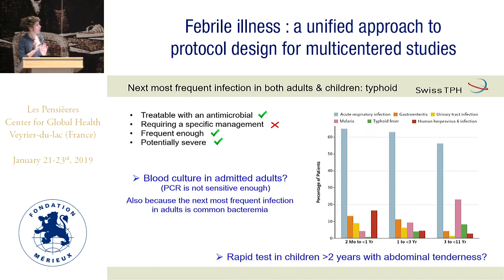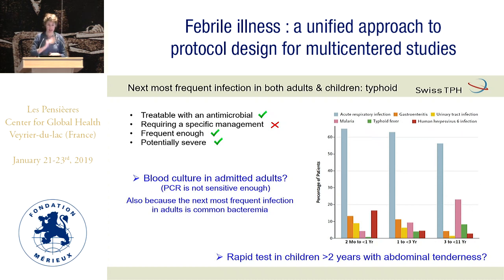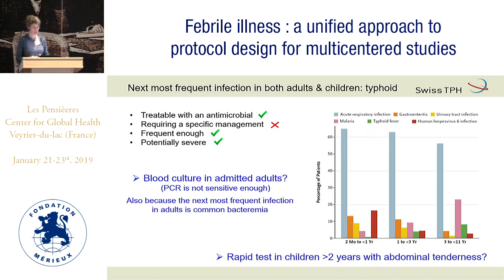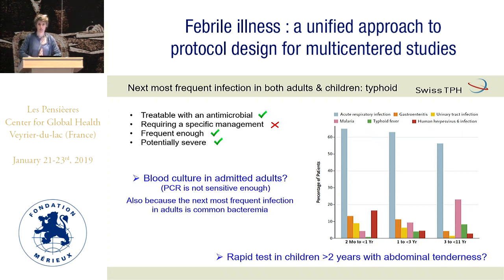For children, we would like to test for typhoid before they are admitted. Should we use the rapid test in the subgroup with abdominal tenderness? I think it's worth it — we have a test that is not too bad, with 80% sensitivity and specificity. We should use them, especially during an epidemic. It's done in Asia — why not try in Africa, maybe based on surveillance again?